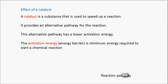We also need to know the effect of a catalyst on the energy profile diagram. A catalyst is something used to speed up a chemical reaction. It provides an alternative pathway for the reaction, but this alternative pathway has a lower activation energy. You can think of the activation energy as the energy barrier that prevents the reaction from taking place — once you supply this energy the reaction will take place. Activation energy is the minimum energy required to start a reaction.